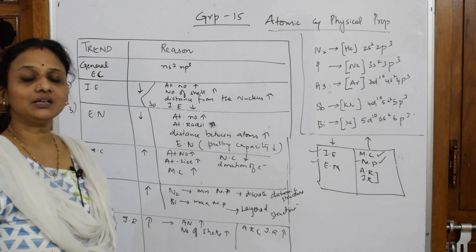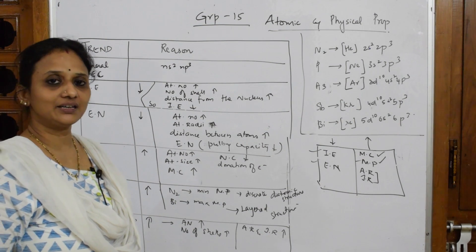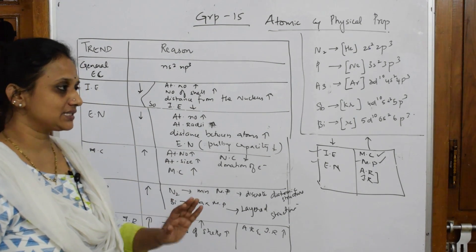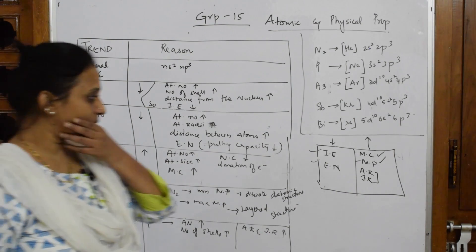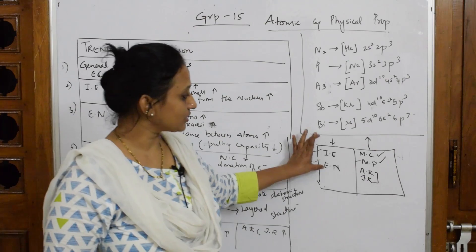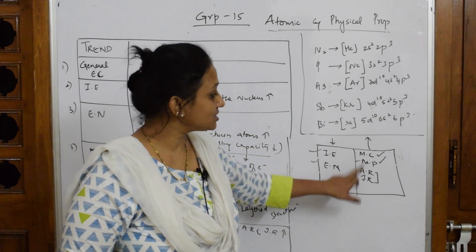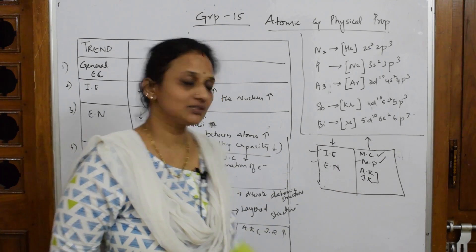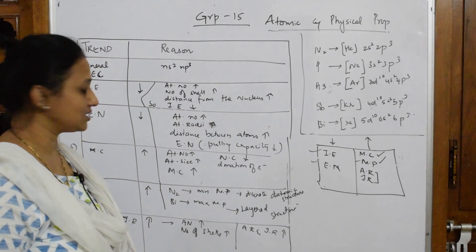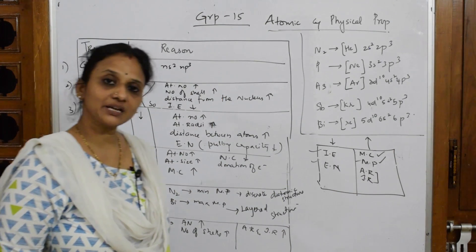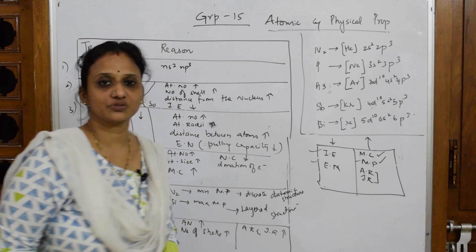To summarize for the exam: ionization enthalpy and electronegativity decrease down group 15, while metallic character, melting point, atomic radii, and ionic radii increase. The reasons are based on increasing atomic number and shell number down the group. Let's come back and do some more questions on this.